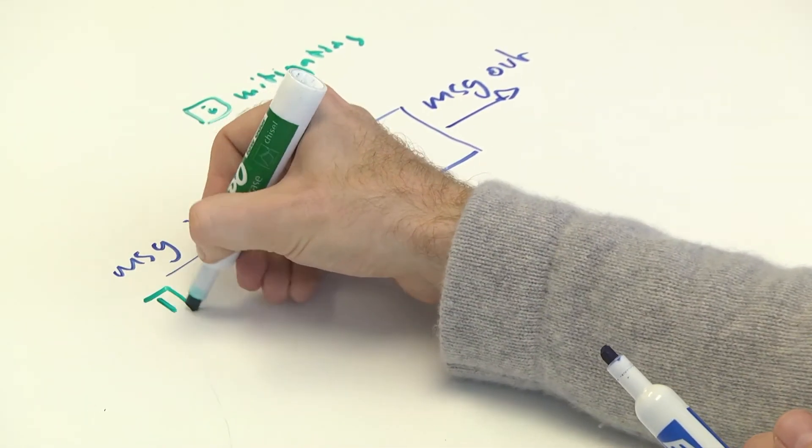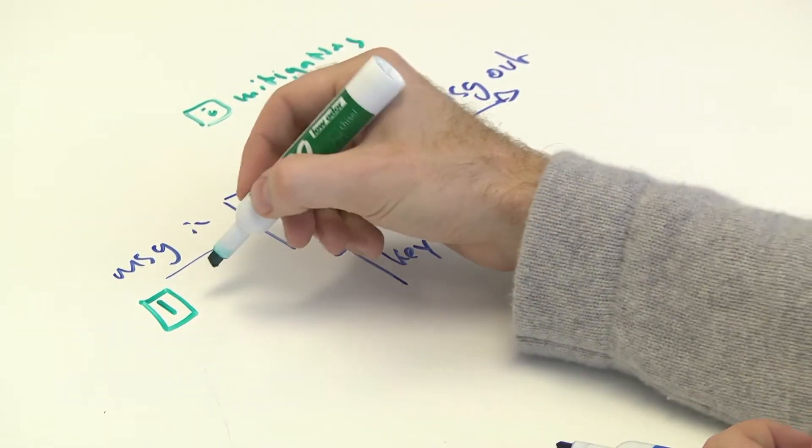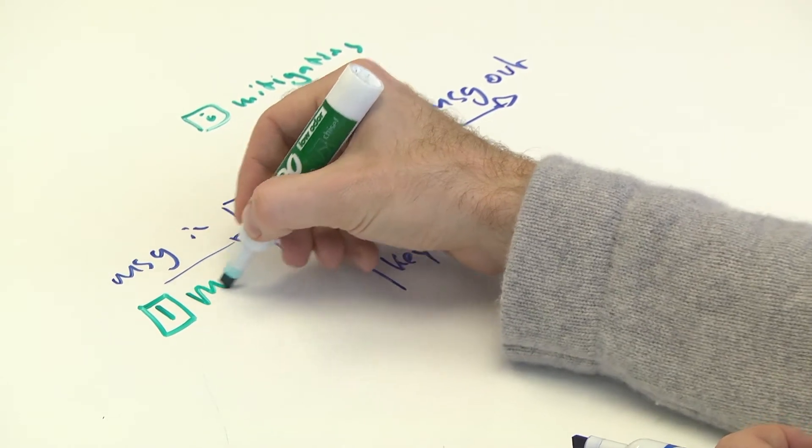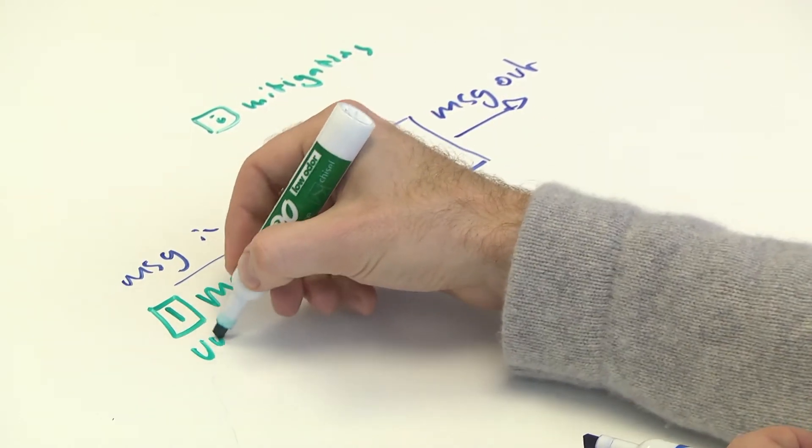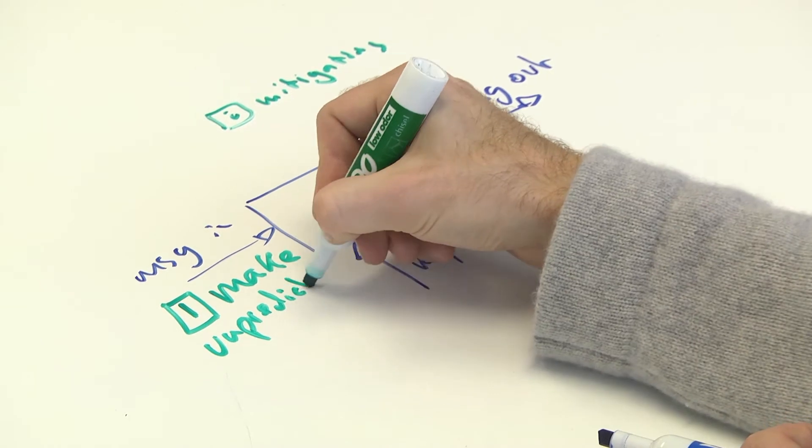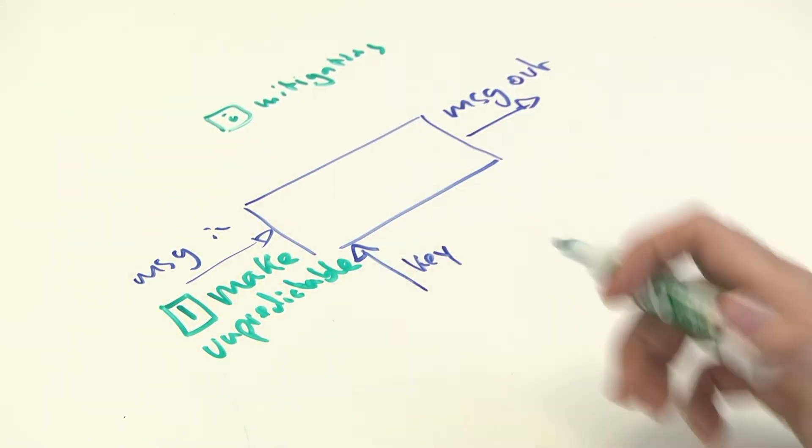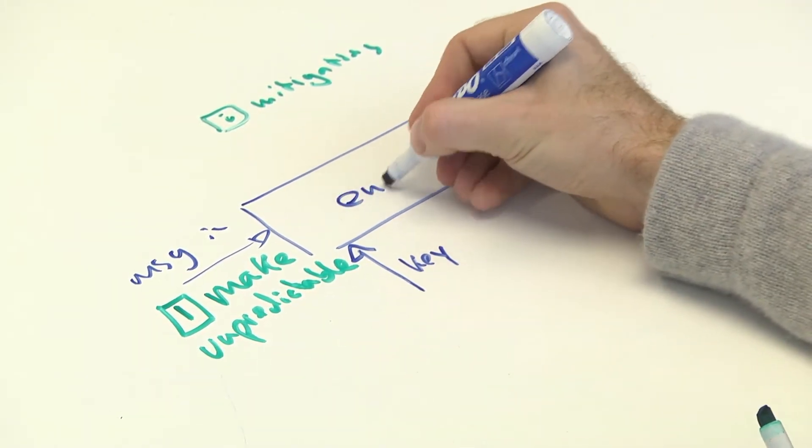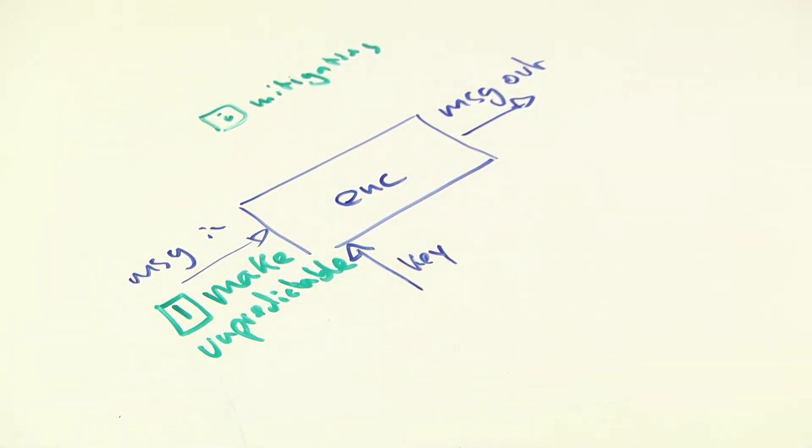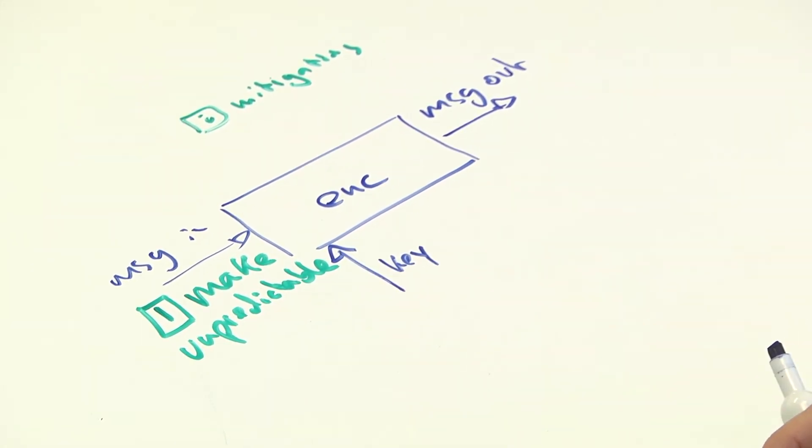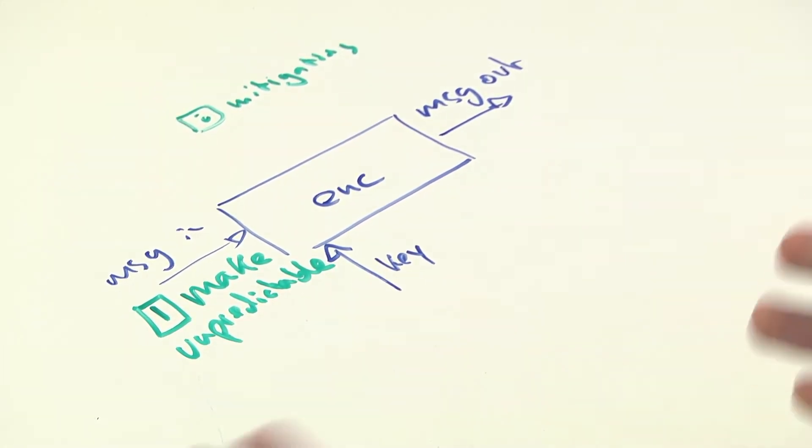Three different mitigations. First, you can make the message unpredictable. Sounds obvious, why would you encrypt something predictable, but a lot of systems do just encrypt a whole stream of data, some of which is encryptable, something is worth protecting, and GSM mixes the two.